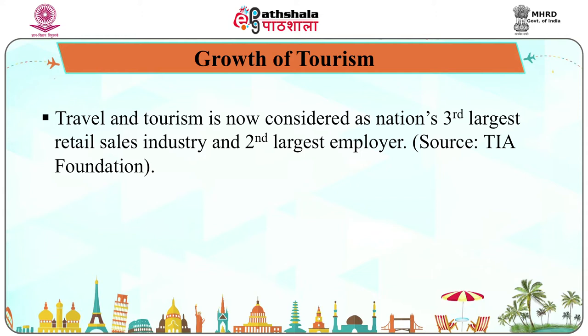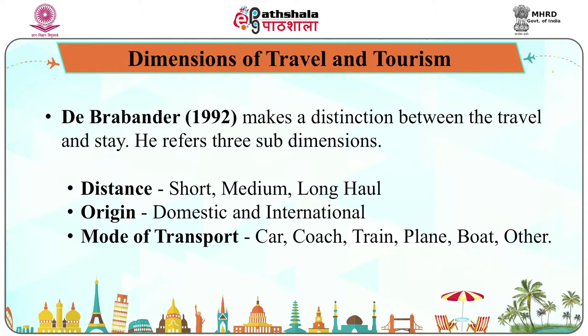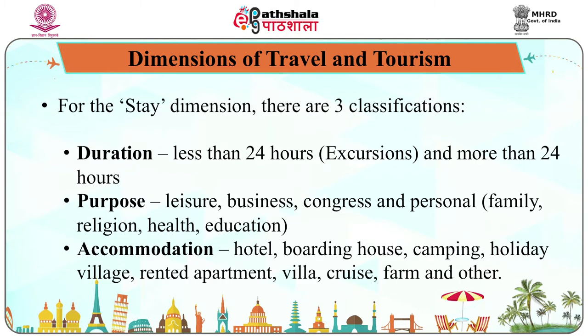Dimensions of Travel and Tourism: D. Babander makes a distinction between travel and stay, referring to three sub-dimensions — distance (short, medium, long), origin (domestic and international), and mode of transport (car, coach, train, plane, boat, and other). For the stay dimension, there are three classifications: duration (less than 24 hours excursions and more than 24 hours). For the latter group, a further distinction is made between short holidays of one to three nights and holidays of four nights or more.